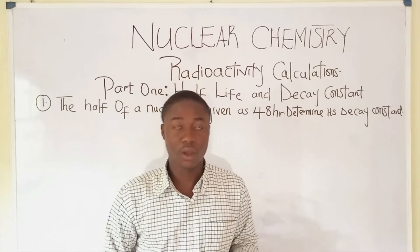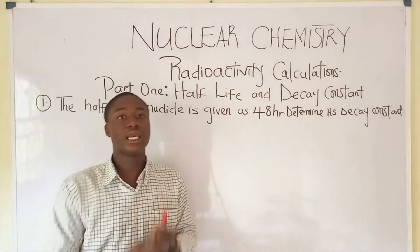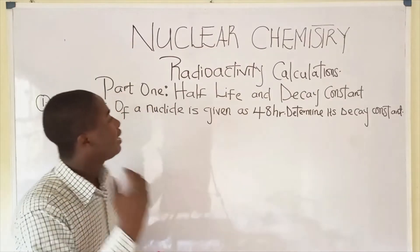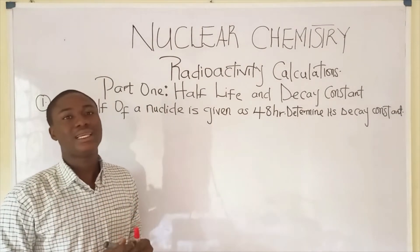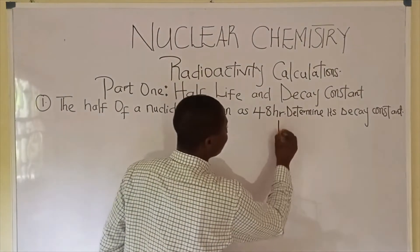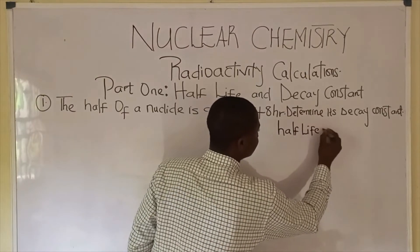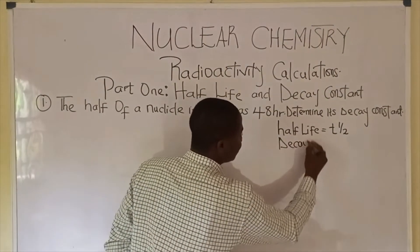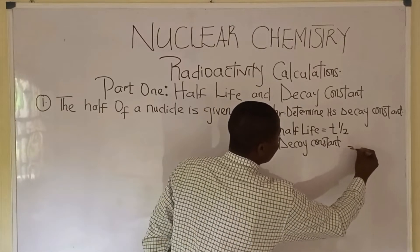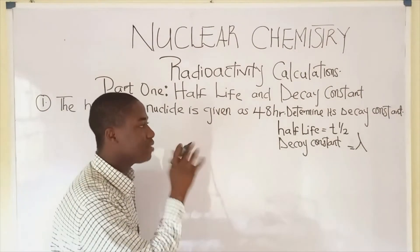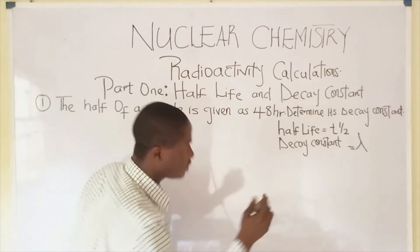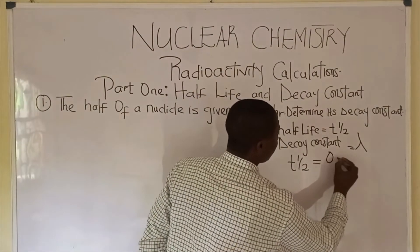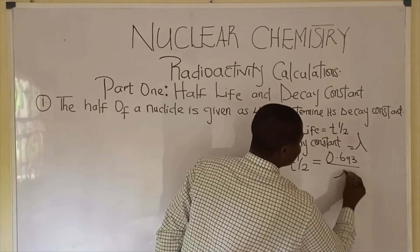You can see the first part written on the board. The first part relates half-life and decay constant. There is a formula that relates half-life and decay constant. Before we talk about that, let's quickly identify half-life and decay constant with symbols. Half-life is given with the symbol T-half. Decay constant is given with the symbol lambda. There is a formula that relates both parameters, and it is simply: half-life, which is T-half, is equal to 0.693 over decay constant.